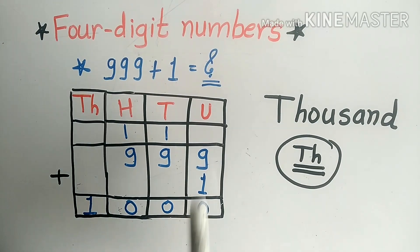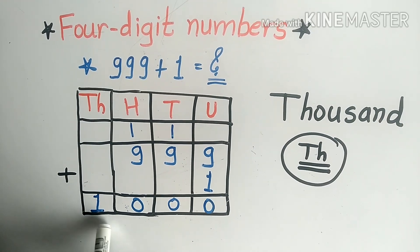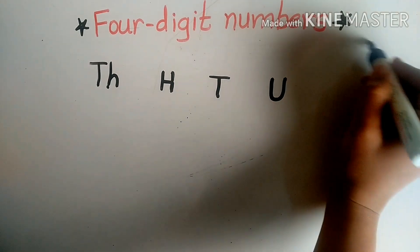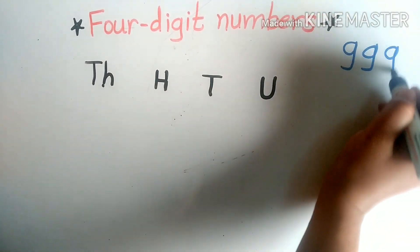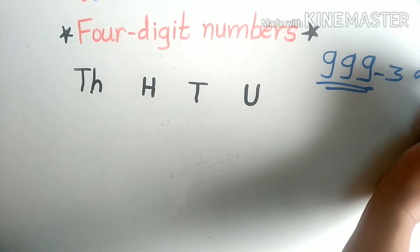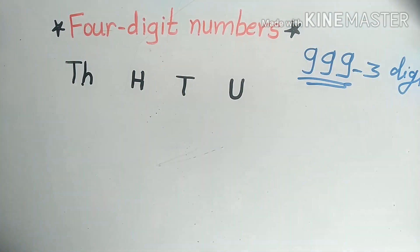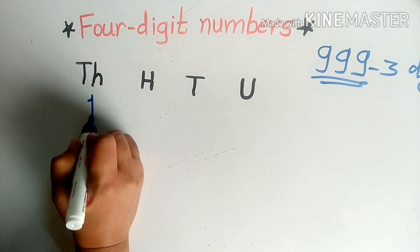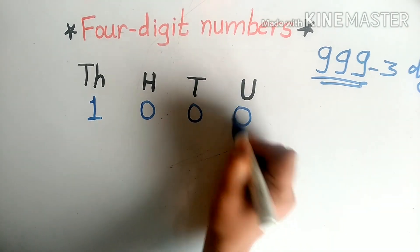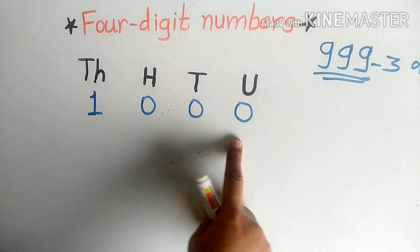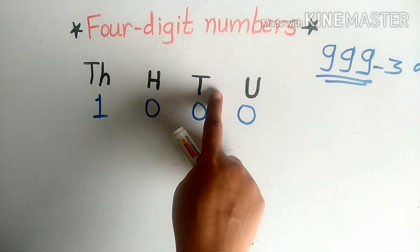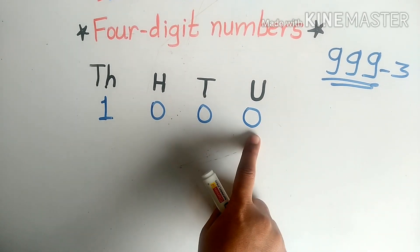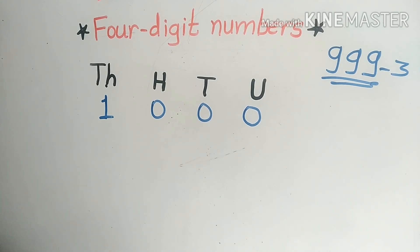So what is the answer of this addition? That is one thousand. Friends, 999 is the biggest three-digit number, and when we add 1 to it we get 1000. We write 1000 in this way: in 1000, 0 is units, 0 is tens, 0 is hundreds, and 1 is thousands. This is one thousand — the smallest four-digit number.